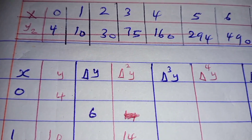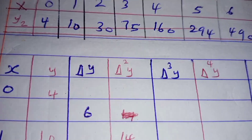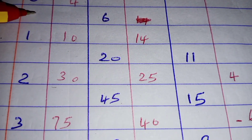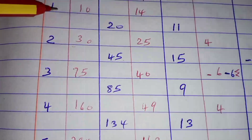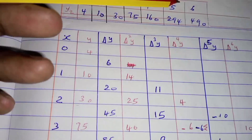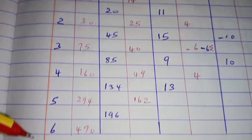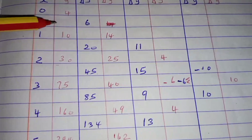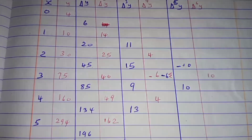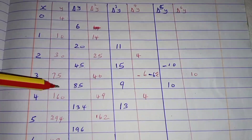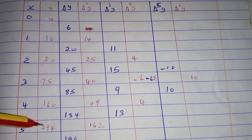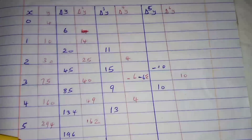To do that, we form a diagonal forward difference table, which is formed by first writing the values of x vertically as shown, from 0 to 6 as given here. Then we write the corresponding values of y diagonally as also indicated in this table. So the values of x and y are written both diagonally as shown.